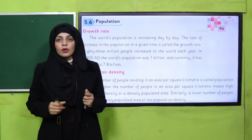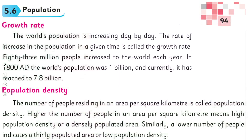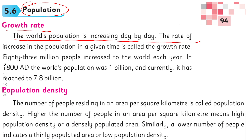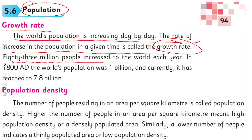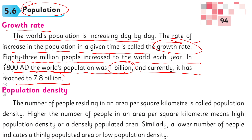Now let's start the reading. Put your fingers where I will read. Population mein aaj jo hum cheez padenge that is growth rate. The world's population is increasing day by day. The rate of increase in population in a given time is called growth rate. Every year, 3 million people are added to the world. In 1800 AD, the world's population was 1 billion, and currently it has reached 7.8 billion.